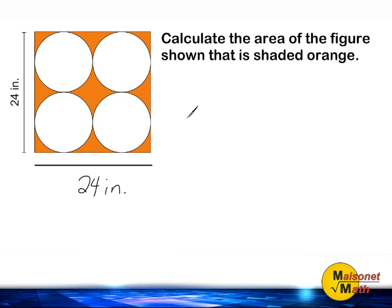So first, we are going to figure out what is the area of the entire square and then we are going to calculate the area of the four circles combined and subtract that from the area of the square and what we have left over is the area that is shaded in orange.